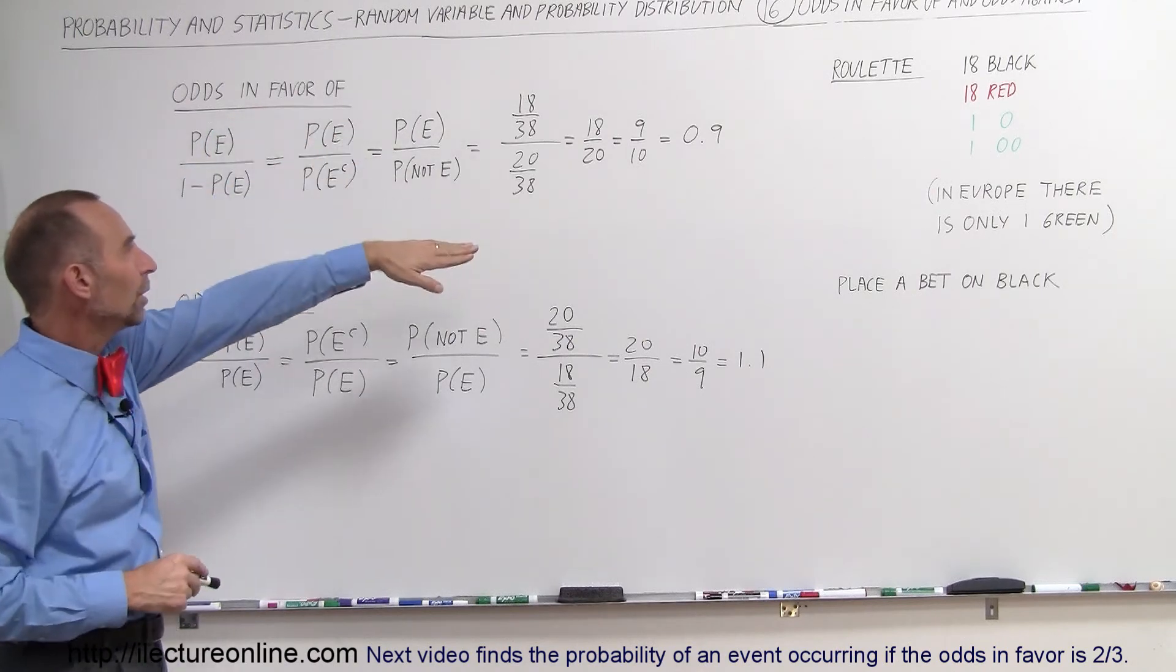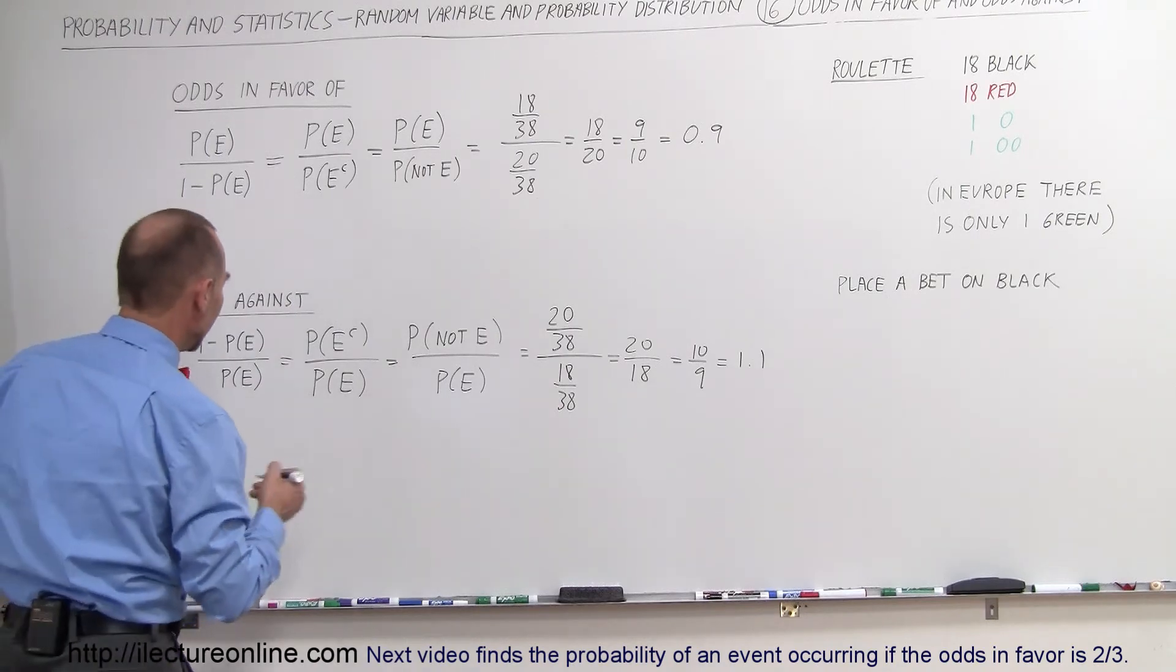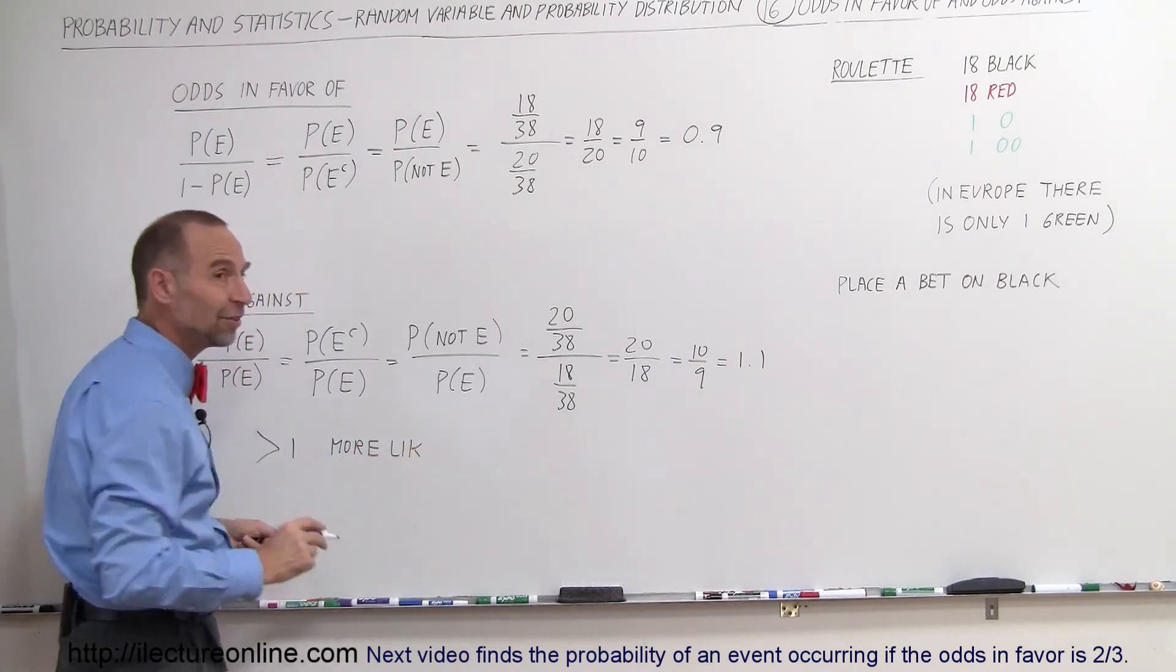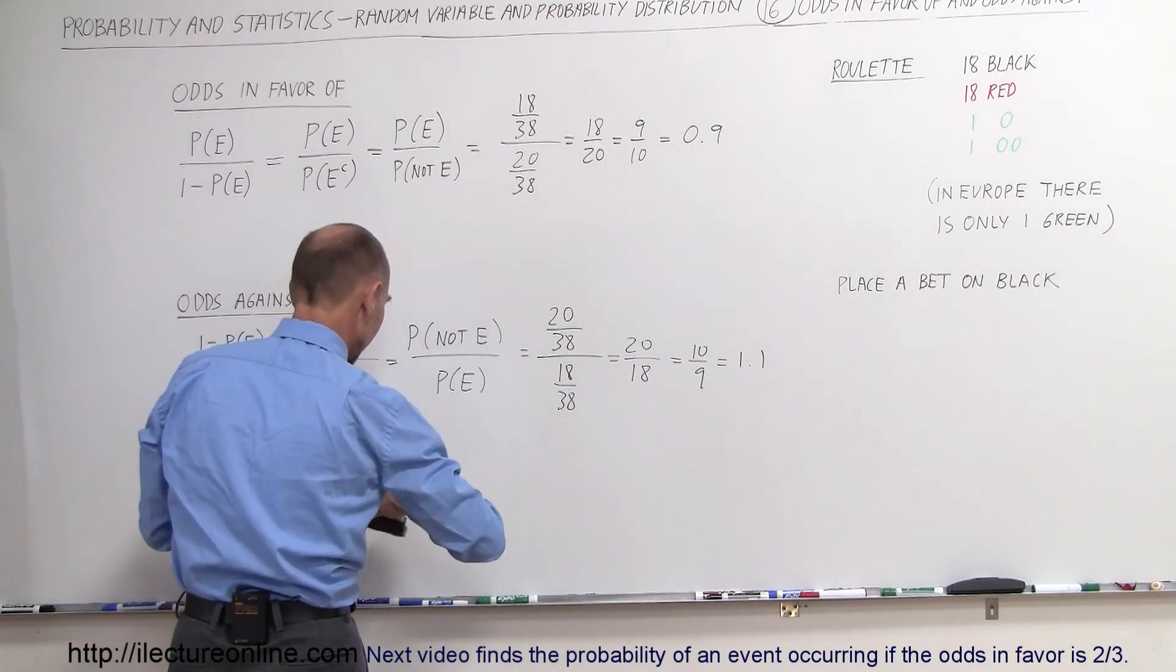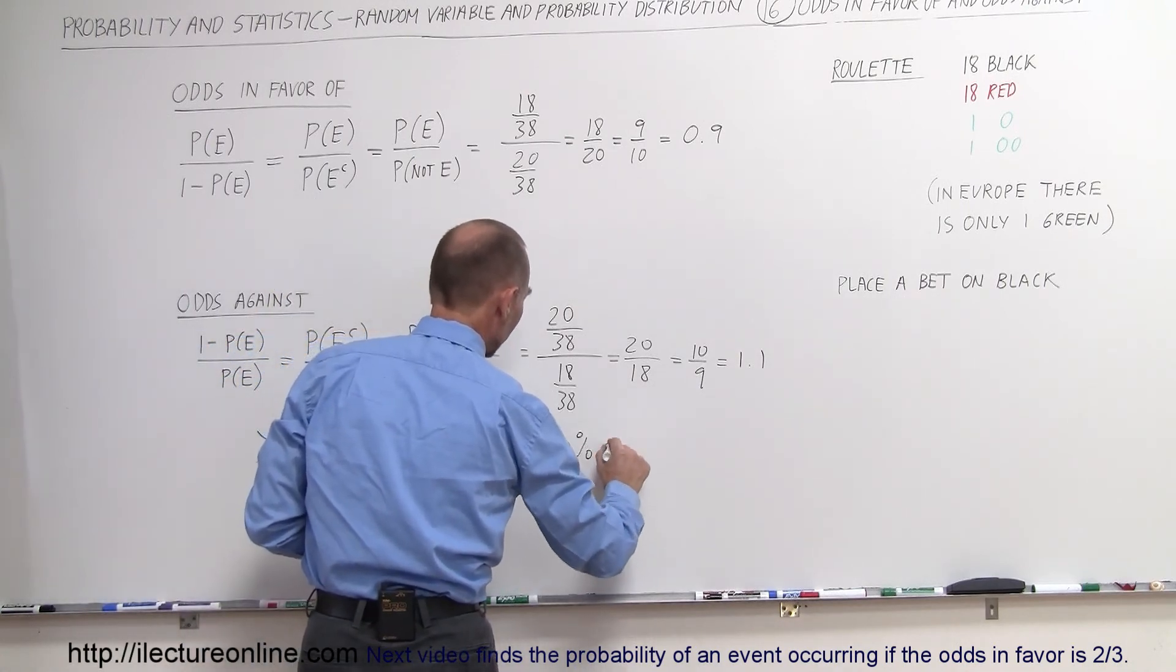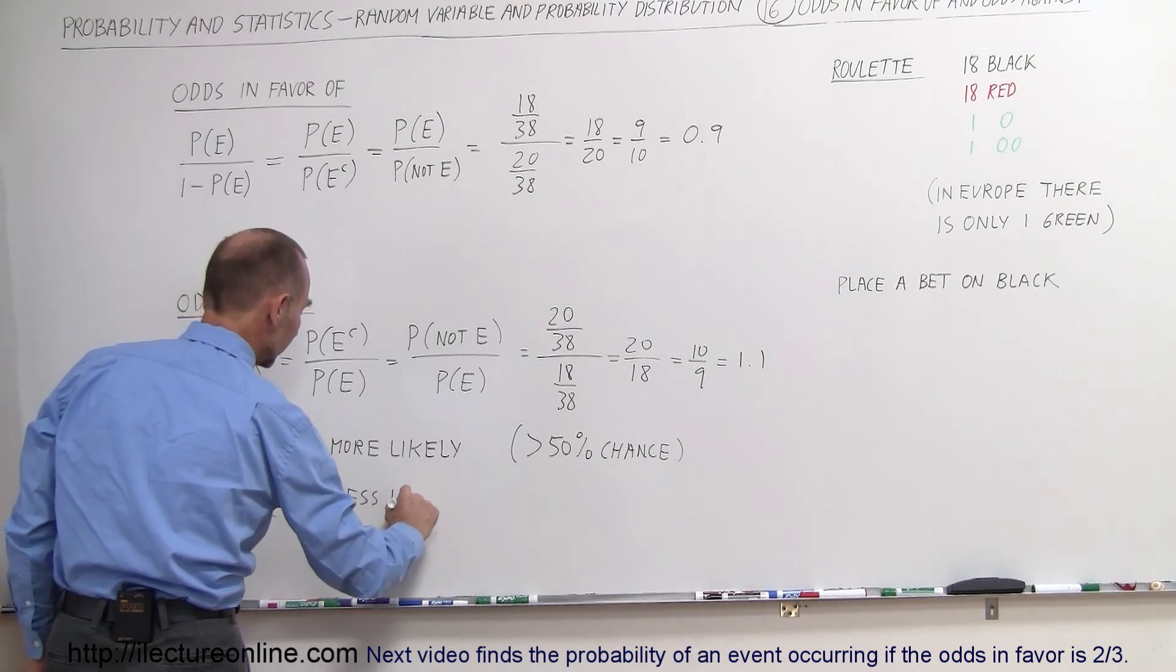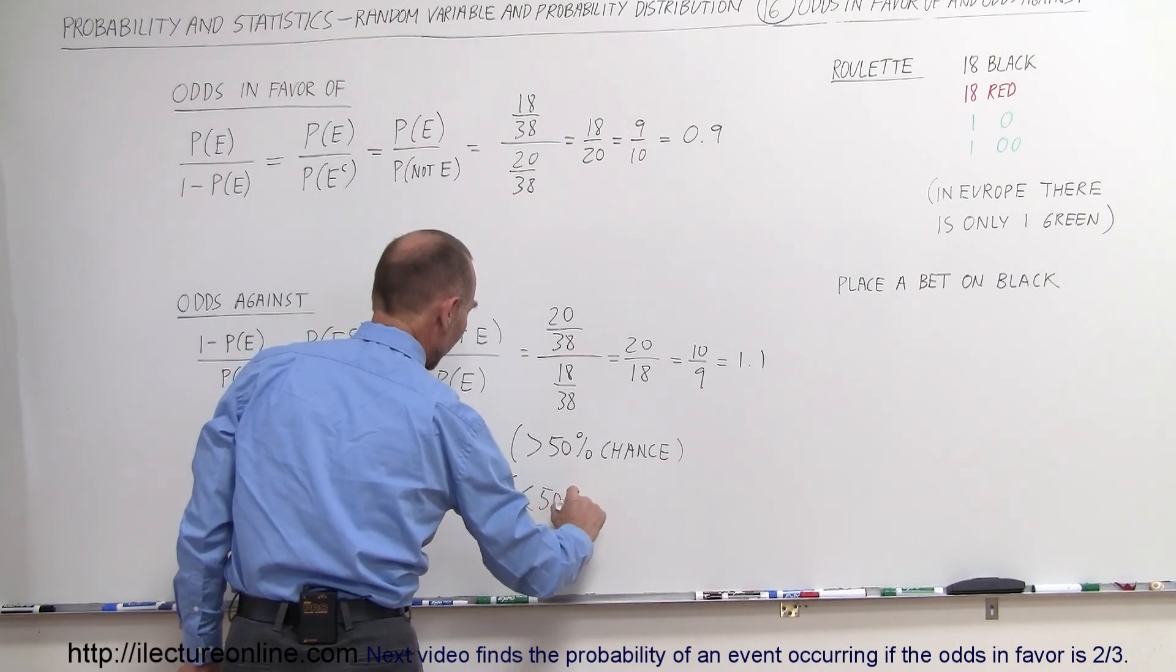Alright so the odds in favor of winning is 0.9, the odds against winning is 1.1. And the way you want to interpret that is, if it's greater than 1 it's more likely to occur, you have more than a 50-50 chance of that happening, more likely, so greater than 50 percent chance if the number is greater than one. And if the number is less than one it's less likely to occur than the other option, and so there's less than 50 percent chance.